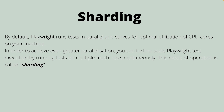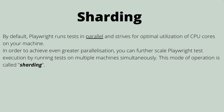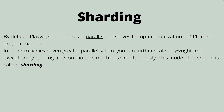So what is sharding? By default, Playwright runs tests in parallel and strives for optimal utilization of CPU cores on your machine. In order to achieve even greater parallelization, you can further scale Playwright's test execution by running tests on multiple machines simultaneously. This mode of operation is called sharding in Playwright.